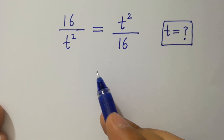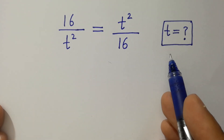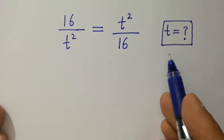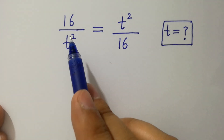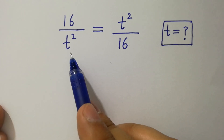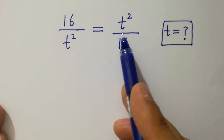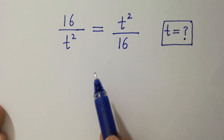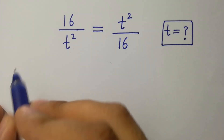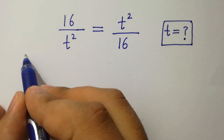Hello friends. Find the value of t if 16 over t squared equals t squared over 16. Let's have a solution.